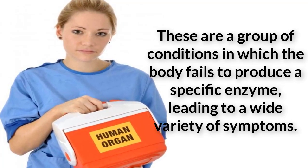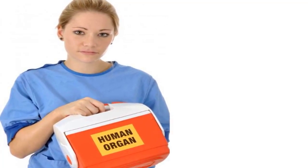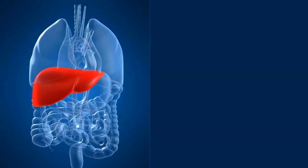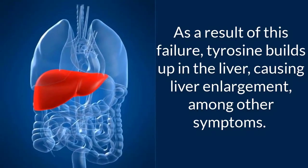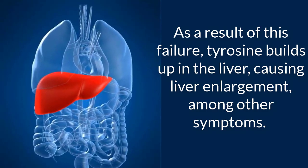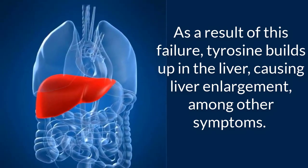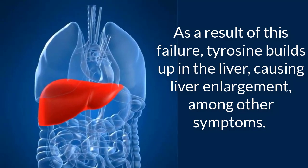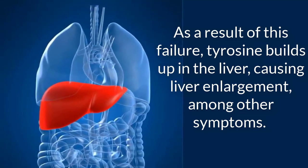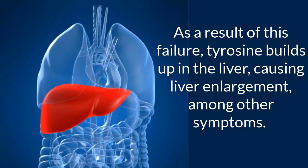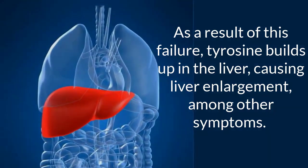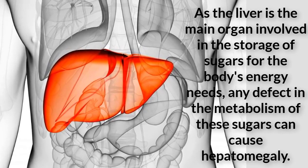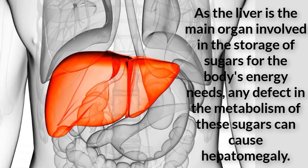Other metabolic disorders that can cause liver enlargement in children include defects in the processing of sugars. As the liver is the main organ involved in the storage of sugars for the body's energy needs, any defect in the metabolism of these sugars can cause hepatomegaly. For example, glycogen storage diseases impair the body's ability to convert glycogen, the long-term storage form of sugar, into glucose, the main sugar used by the body.